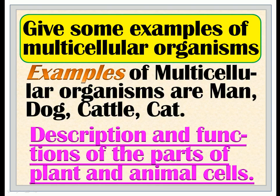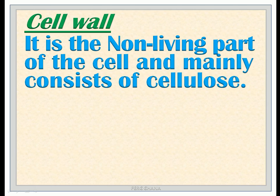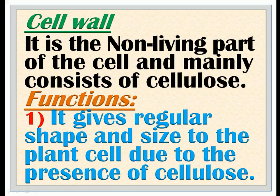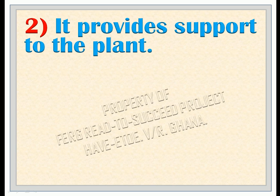Description and functions of the parts of plant and animal cells. Cell wall: it is the non-living part of the cell and mainly consists of cellulose. Functions: 1. It gives regular shape and size to the plant cell due to the presence of cellulose. 2. It provides support to the plant.